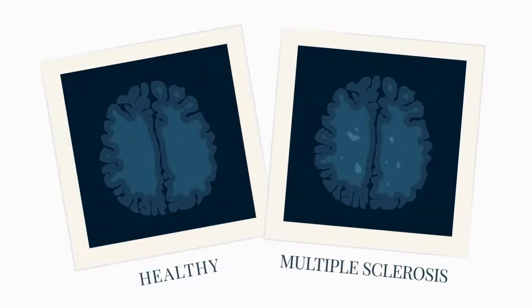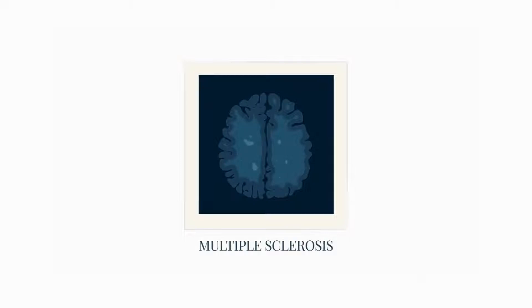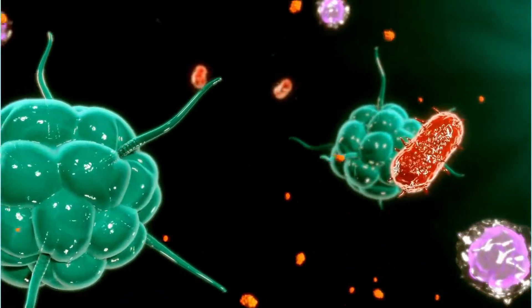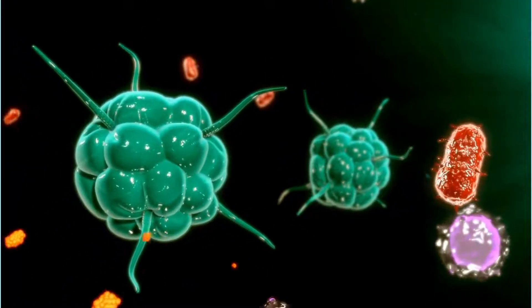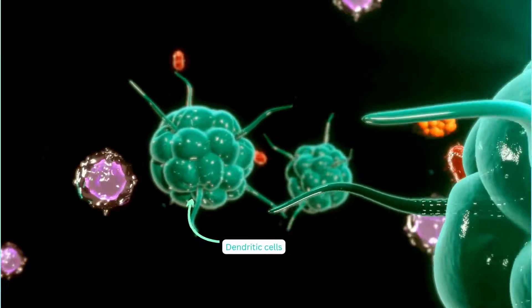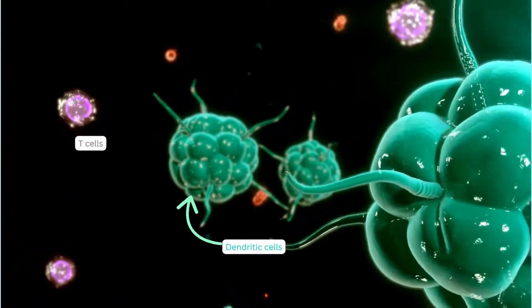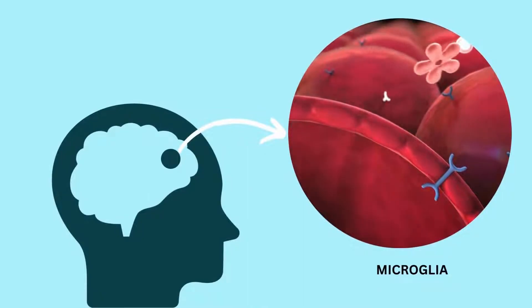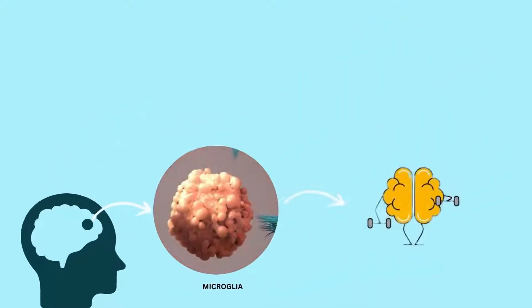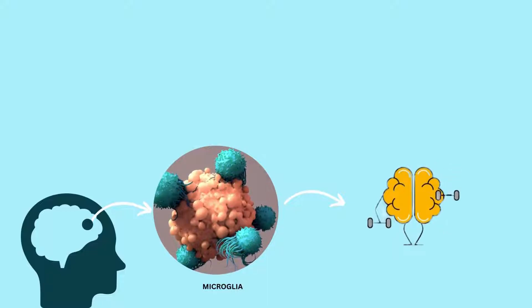To understand the pathophysiology of MS, we must understand how our immune system works. We have discussed beautifully how the immune system works, you can watch the video in description below. For now, just a quick overview. When a foreign body enters our system, our immune system plays its role. The first encounter is antigen receptor cells or antigen-presenting cells. Dendritic cells are professional antigen-presenting cells that play an important role in promoting the activation and differentiation of naive T cells. Microglia are a type of neuroglia, glial cells, located throughout the brain and spinal cord. Microglia account for 10-15% of all cells found within the brain. As the resident macrophage cells, they act as the first and main form of active immune defense in the central nervous system.